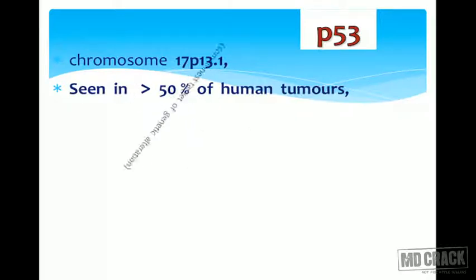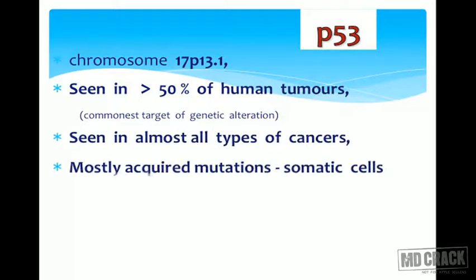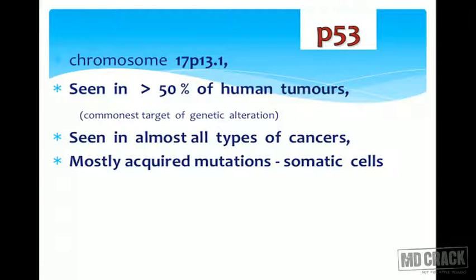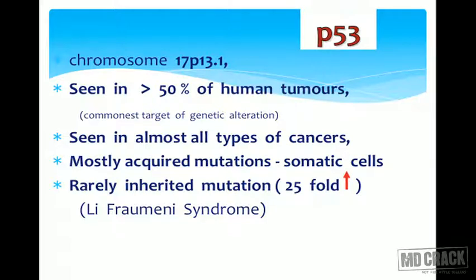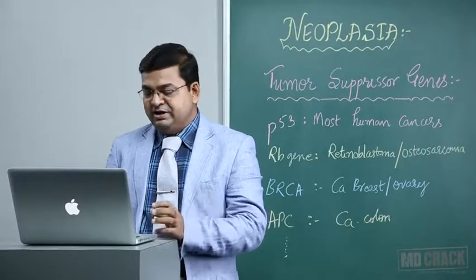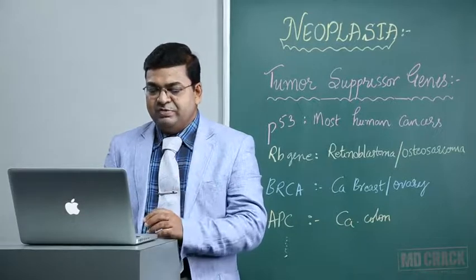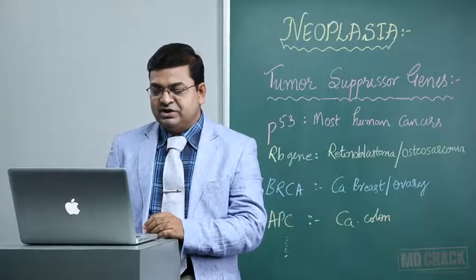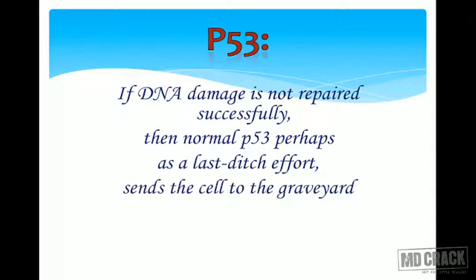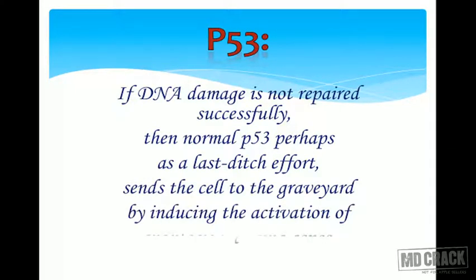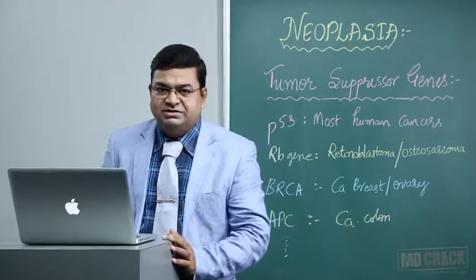More than 50 percent of human tumors have p53 gene mutations, making it one of the most common targets of genetic alterations seen in almost all varieties of human cancers. Mostly these are acquired mutations in somatic cells. There is a rare condition called Li-Fraumeni syndrome where persons have more than 25 percent increased chances of developing multiple cancers — such as cancers of the stomach, pancreas, bladder, and breast — at a very young age. If DNA damage is not repaired successfully, normal p53 sends the cell to the graveyard by inducing activation of apoptosis-inducing genes.